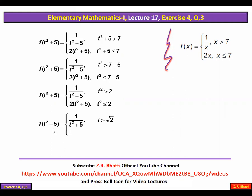So the final answer is: f(t² + 5) = 1/(t² + 5) if t > √2, and f(t² + 5) = 2(t² + 5) if t ≤ √2.